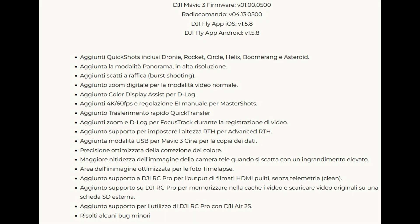È stata aggiunta la modalità panorama in alta risoluzione. Sono stati aggiunti gli scatti a raffica, lo zoom digitale per la modalità video normale — quella che fa uso della telecamera principale — adesso a 4K è possibile zoomare fino a 2x digitalmente. Mentre per la telecamera superiore, quella con lo zoom, quella che ha ottica 7x nativa ma che arriva fino a 28x con lo zoom digitale, è stata aumentata la nitidezza. Poi è stato aggiunto il color assist per il D-log, ovvero la modalità assistita a colori quando si attiva il D-log.